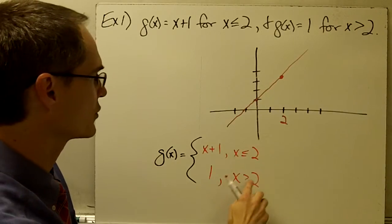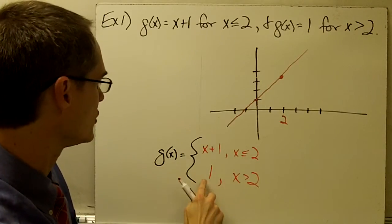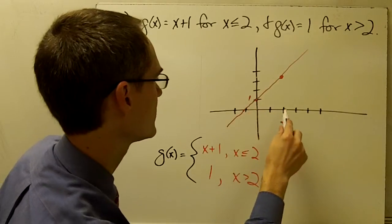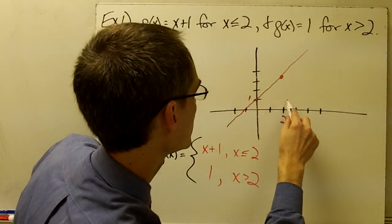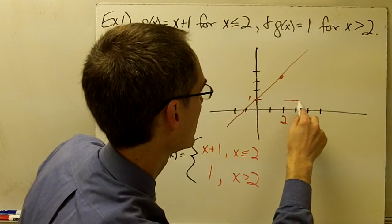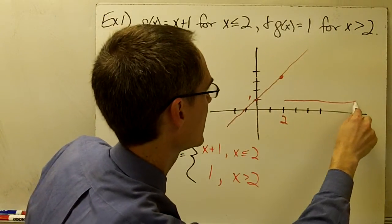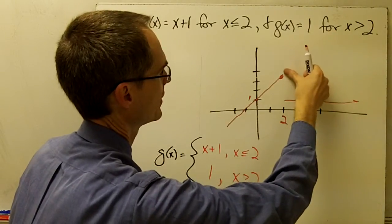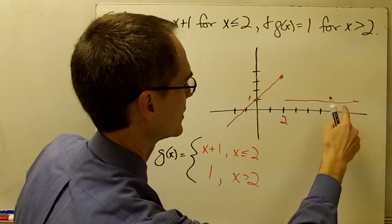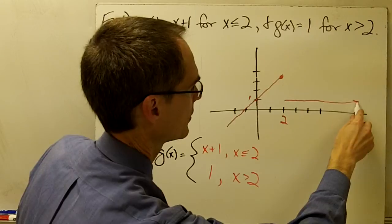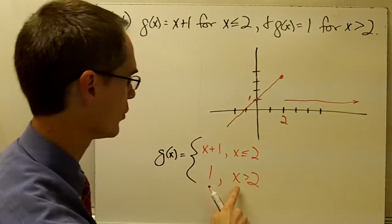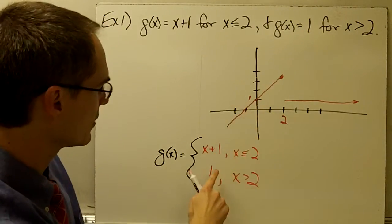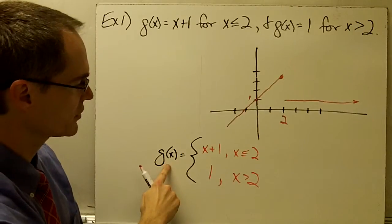For x greater than 2, g of x is going to be equal to 1. Here's where 1 is on the graph. So from here out, I've just got a constant function — this part of the graph is not going to be there. The graph jumps down here for everywhere x is greater than 2. One thing to note about this: this is a function.